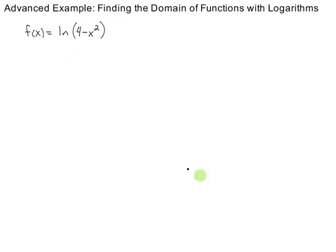So, here's a function, f of x equals the natural logarithm of 4 minus x squared, and we know, in general, that this has to be a positive number for the output to be a nice number, a real number.